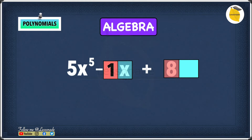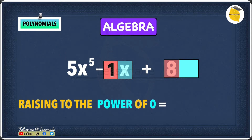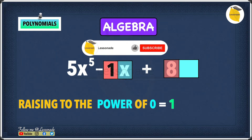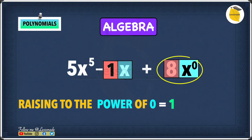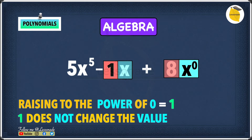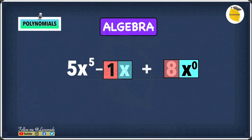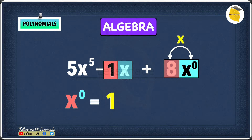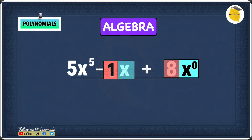What about the 8? For the 8, we're missing the variable. We know that raising something to the power of 0 equals 1. So if we use x as our variable and raise it to the power of 0, we get 8x to the power of 0, and x to the power of 0 is 1. So we're doing 8 times 1, which equals 8. You don't really have to write x to the power of 0, but it's there to show that there is a variable.